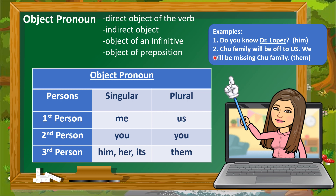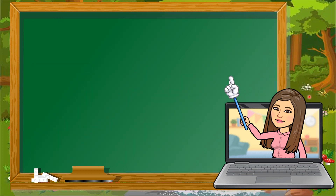Example two: 'True family will be off to the US. We will be missing true family.' Instead of repeating 'true family,' we change it to 'them' — third person plural. So: 'We will be missing them.'